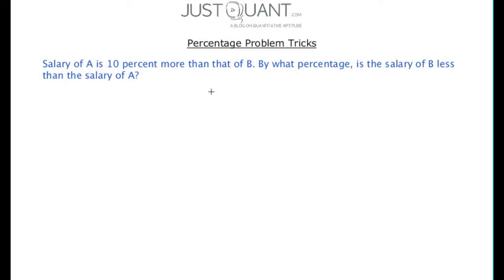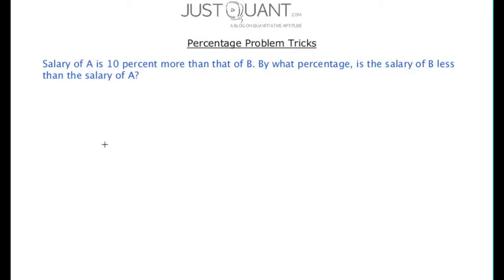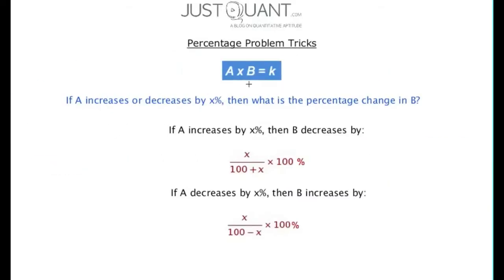Here, A is expressed in terms of B. To calculate B in terms of A, we use the same formula that we used before, although the product of A and B is not constant.